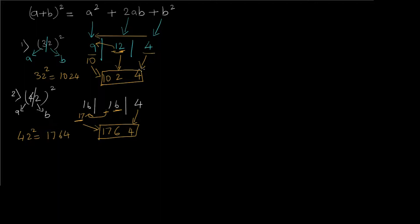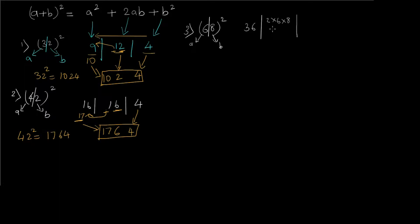Let's see one more example with a two-digit number — the square of 68. According to the formula, we divide it into two parts: a = 6 and b = 8. So a² is 6² = 36. The center part 2ab is 2 × 6 × 8 = 96. And the last part b² is 8² = 64.